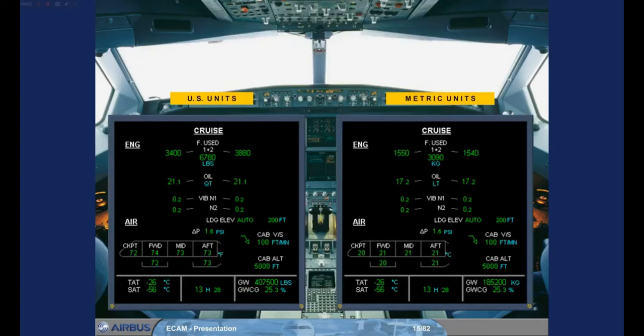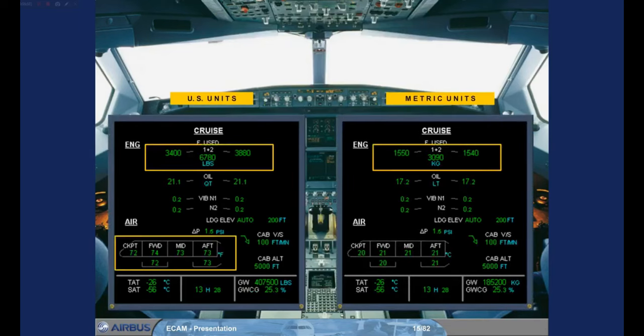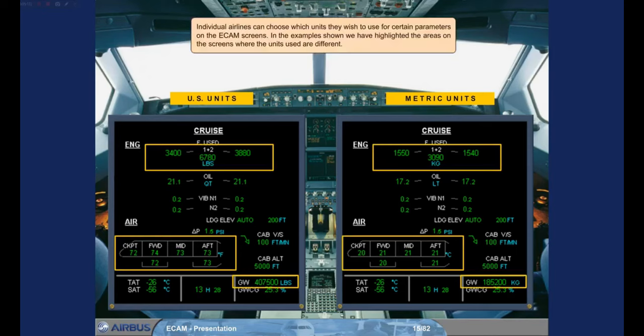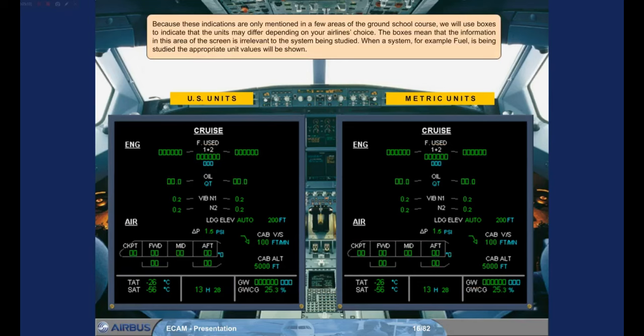Individual airlines can choose which units they wish to use for certain parameters on the ECAM screens. In the examples shown, we have highlighted the areas on the screens where the units used are different. Because these indications are only mentioned in a few areas of the ground school course, we will use boxes to indicate that the units may differ depending on your airline's choice. The boxes mean that the information in this area of the screen is irrelevant to the system being studied. When a system, for example fuel, is being studied, the appropriate unit values will be shown.